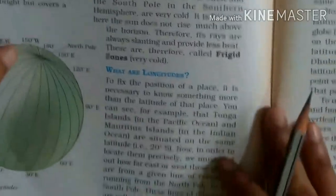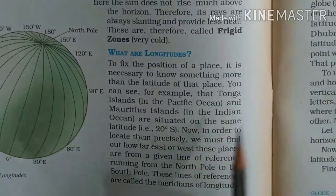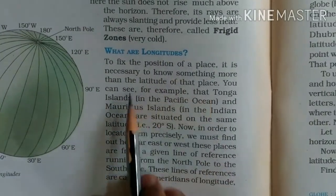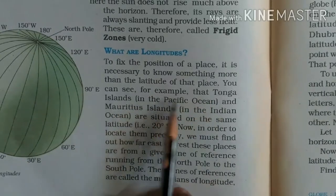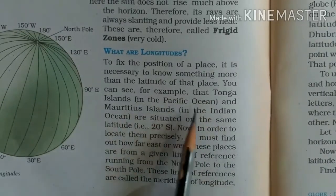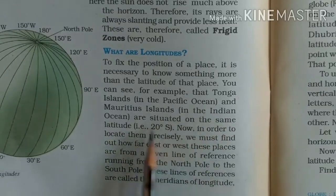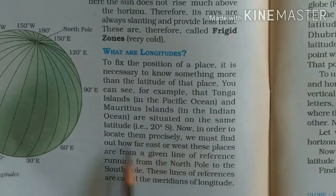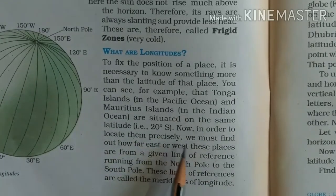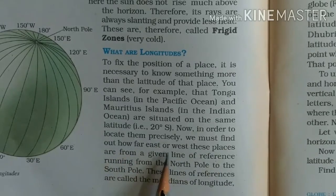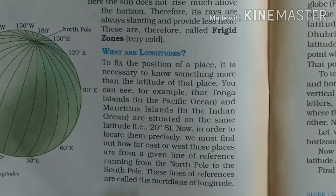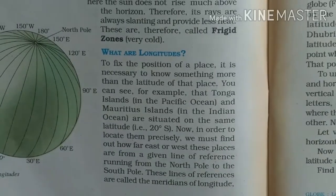Now, what are longitudes? To fix the position of a place, it is necessary to know something more than the latitude of that place. For example, Tonga Island in the Pacific Ocean and Mauritius Island in the Indian Ocean are situated on the same latitude - 20 degrees south. Now in order to locate them precisely, we must find out how far east or west these places are from a given line of reference running from the North Pole to the South Pole. These lines of reference are called the meridians of longitude.